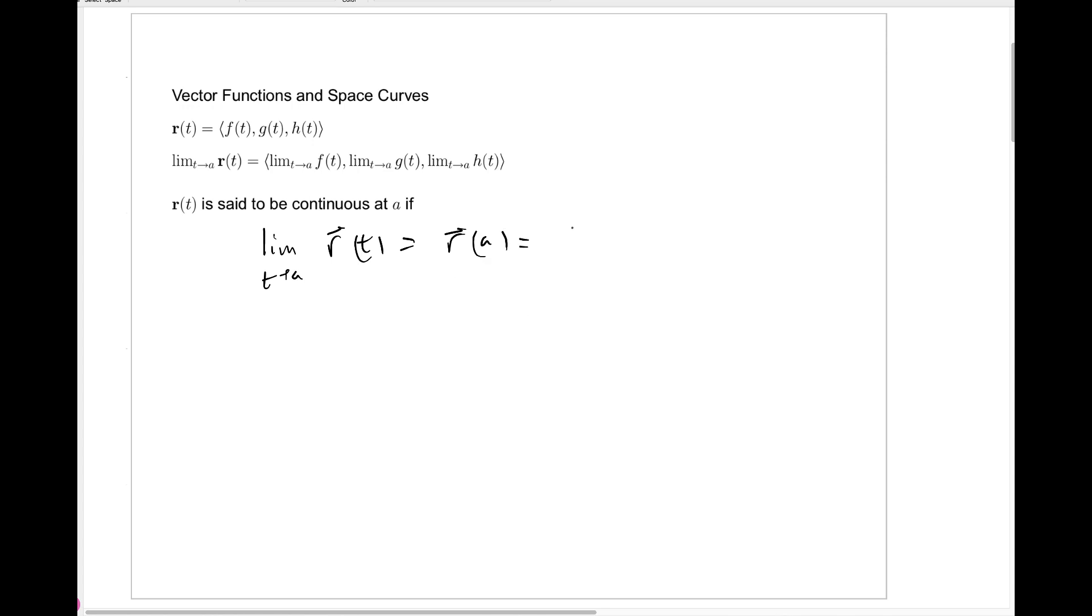And of course, r of a is just the vector f of a, g of a, h of a, like that. Now, this is all preparing us to talk about differentiation for vector functions. Formally, this comes in the next section, but you can see right away how we should make that definition. We'll talk about the derivative of the vector function r prime of t as the limit as delta t approaches 0 of r of t plus delta t minus r of t over delta t.